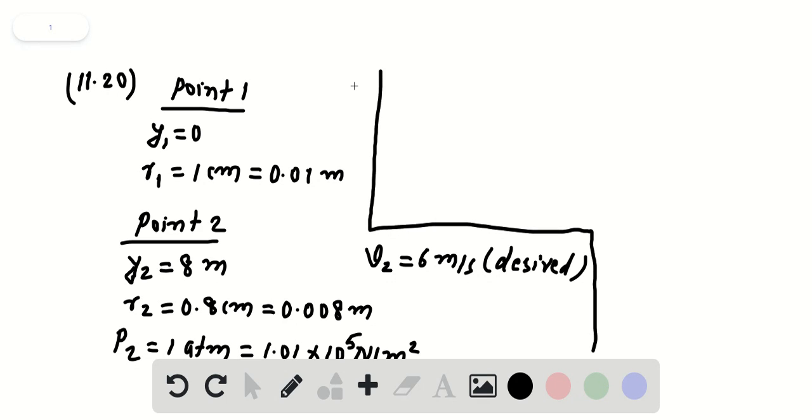Now, first of all, from the equation of continuity, the flow rate at point 1 must be same as flow rate at point 2. That means Q1 equals Q2. That's going to imply that A1 V1 equals A2 V2.